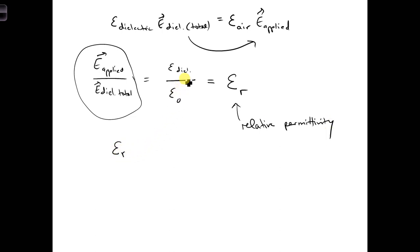Epsilon r is equal to epsilon dielectric over epsilon naught. Then we can write epsilon dielectric is epsilon naught times epsilon r.